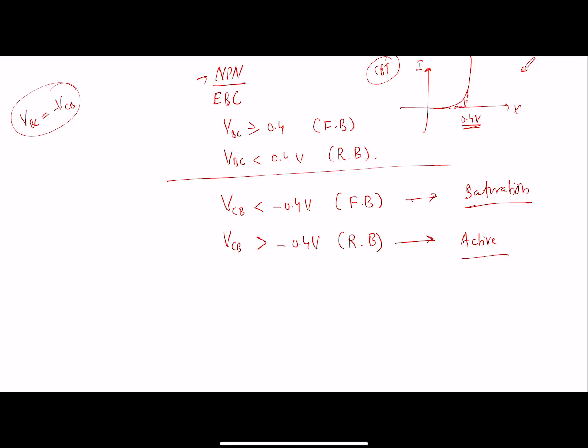Since it's an NPN transistor where our base is P-type and our collector is N-type, in order to forward bias, our P-type material should be at least at 0.4 volts higher potential as compared to the collector to forward bias. So if it will be less than that, it will be reverse biased.